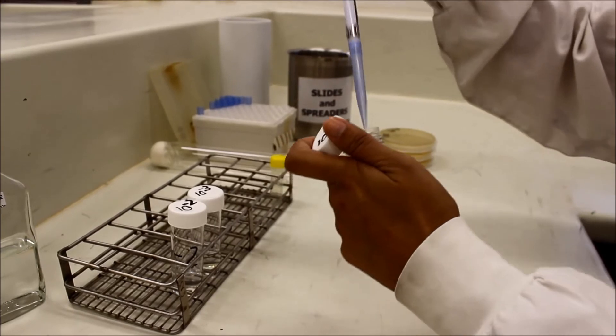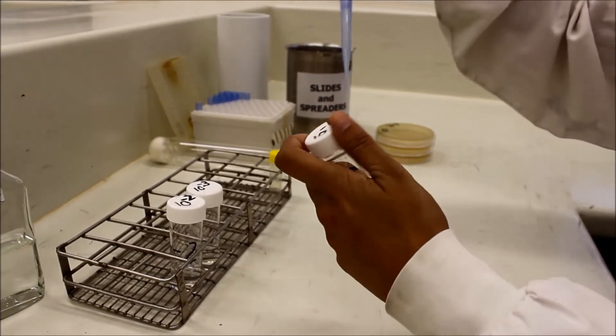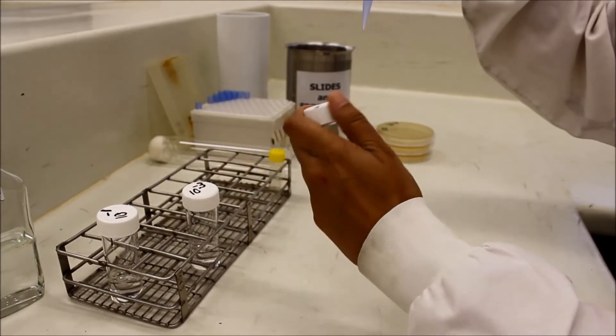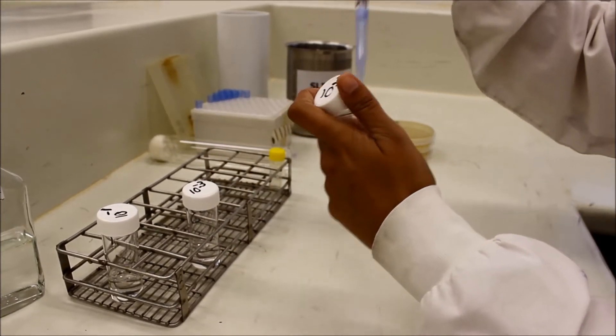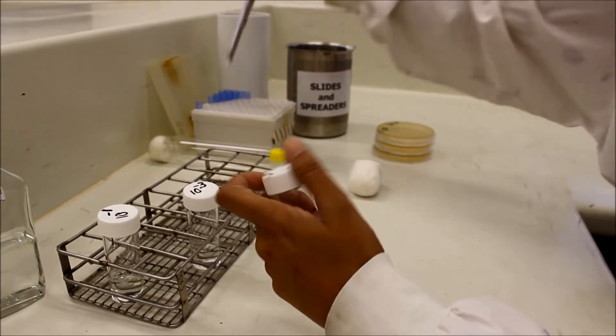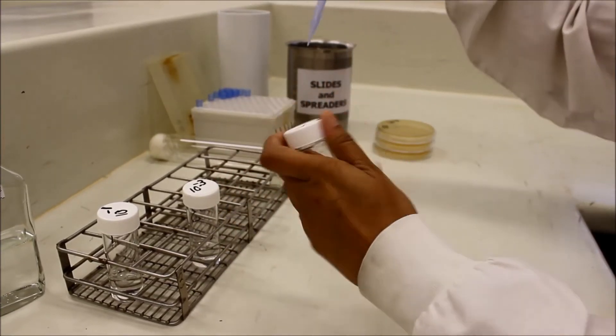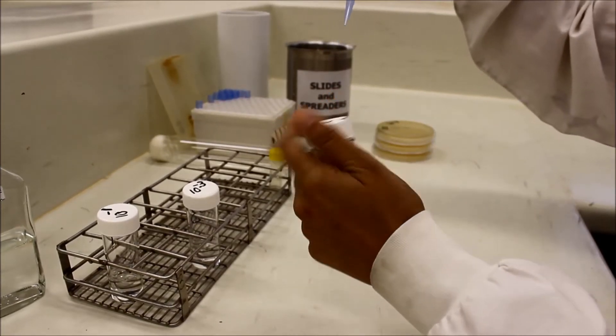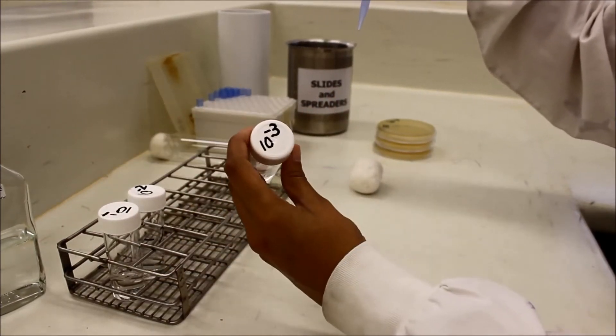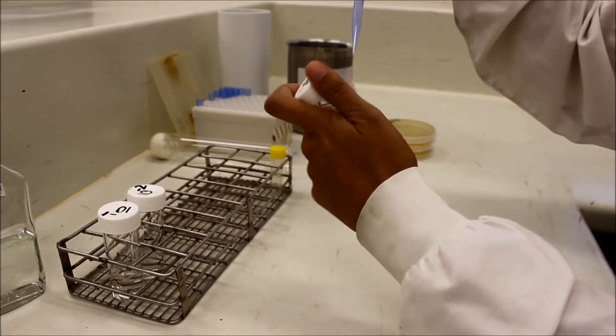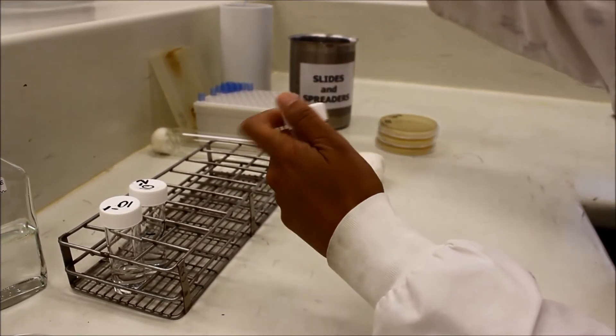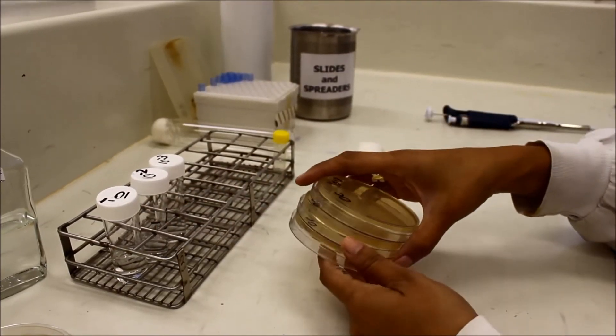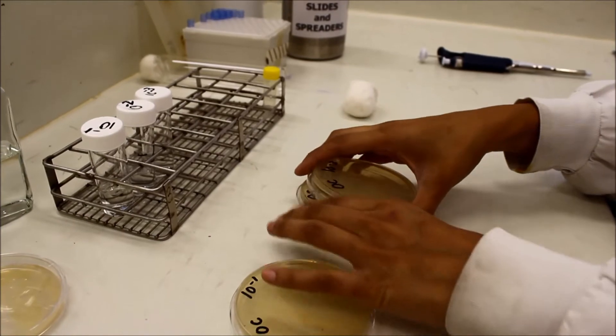You will then prepare the remaining 10-fold dilution. These dilutions are what you will use for your viable count. Make sure you clearly label all your plates beforehand.